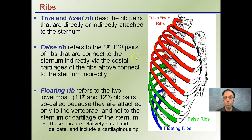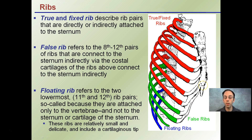False ribs are ribs 8 through 12, as you see down here. They connect to the sternum indirectly via costal cartilages of the ribs above that connect to the sternum directly. What that basically means is here are our false ribs connecting here, and this cartilage is joined together, which then connects directly to the sternum. These false ribs are all joined together, and this cartilage then joins to the sternum.